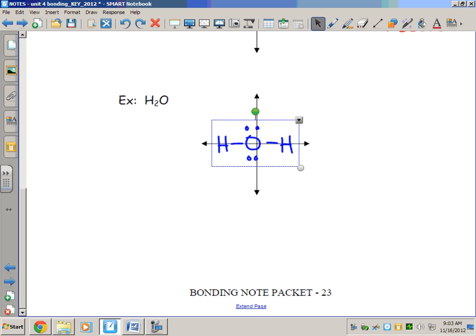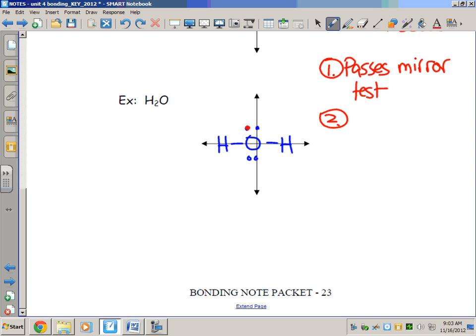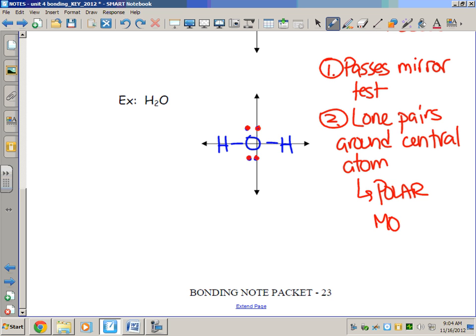However, even if we draw it this way and we said mistakenly that it passes the mirror test the way we have it drawn, our second test has to do with these lone pairs. It has lone pairs around the central atom. That means it is a polar molecule.